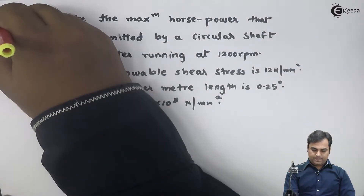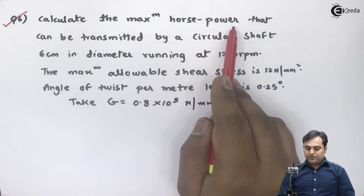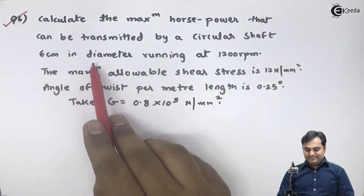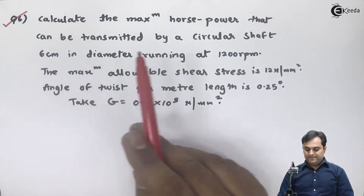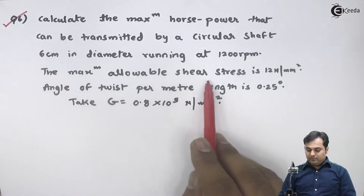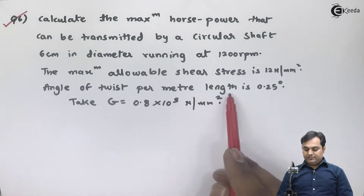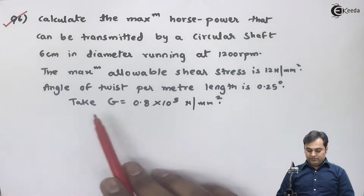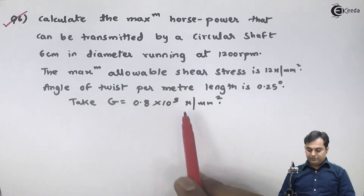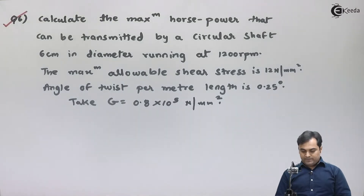Calculate the maximum horsepower that can be transmitted by a circular shaft 6 centimeter in diameter, running at 1200 RPM. Maximum allowable shear stress is 12 Newton per mm square. Angle of twist per meter length is 0.25 degree. Take G equal to 0.8 into 10 raised to 5 Newton per mm square.